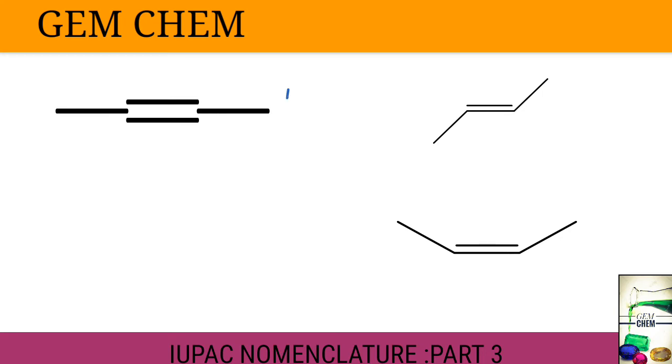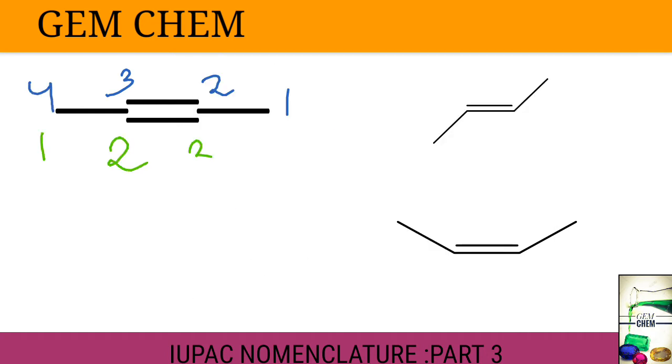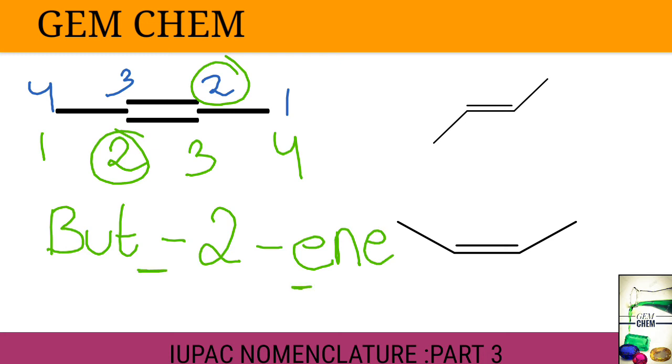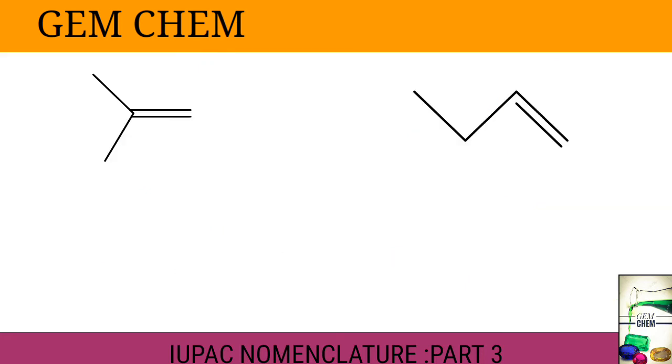Now we go to our next example. See this one. We have 1, 2, 3, 4 carbons. If we number from the opposite side, 1, 2, 3, 4 carbons, right? So in both cases, the double bond is getting either here two or here two. So the double bond is in the second position. So we write but-2-ene. We have dropped the A here since there is a vowel here. Now this will be, since the two methyl groups are present in different directions, this will be trans-but-2-ene. The A is dropped. And cis-but-2-ene.